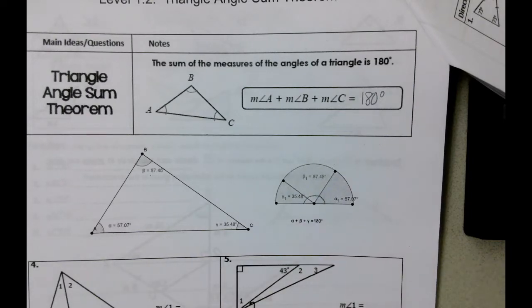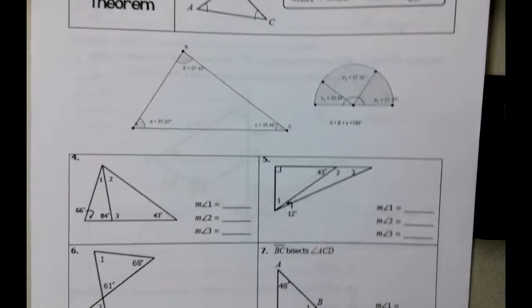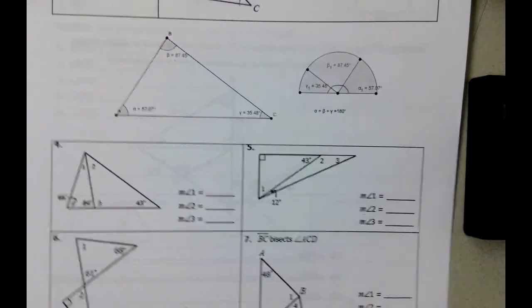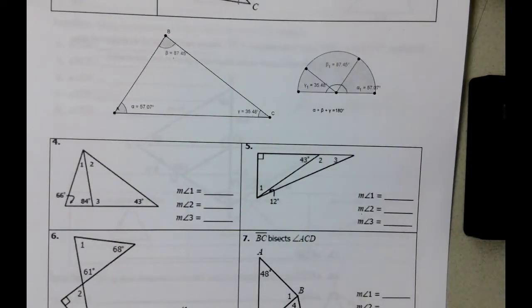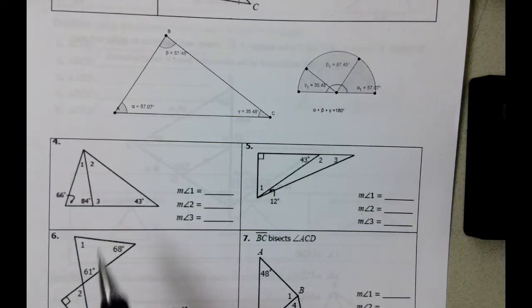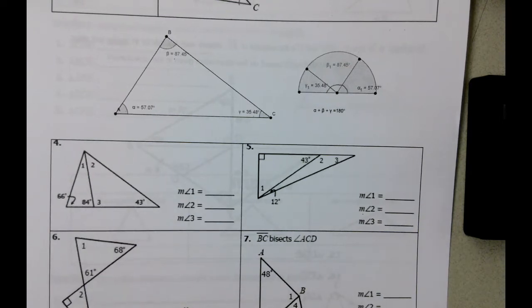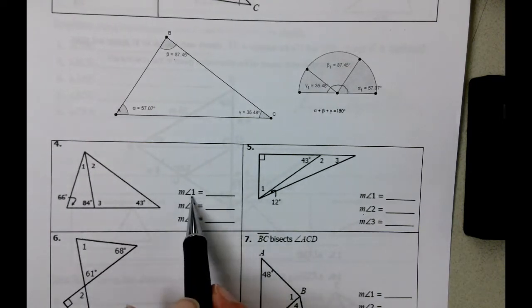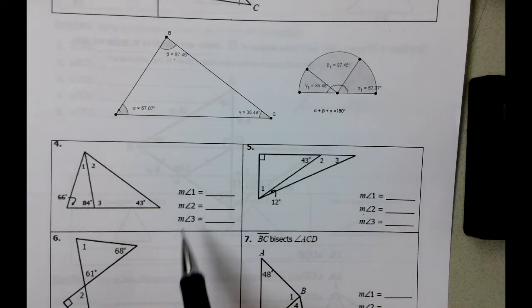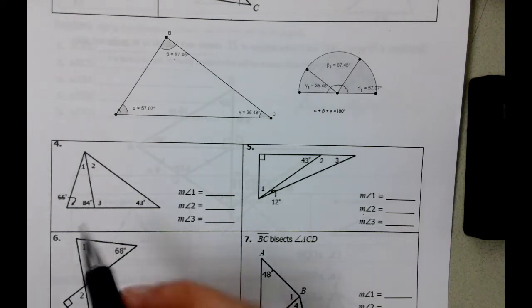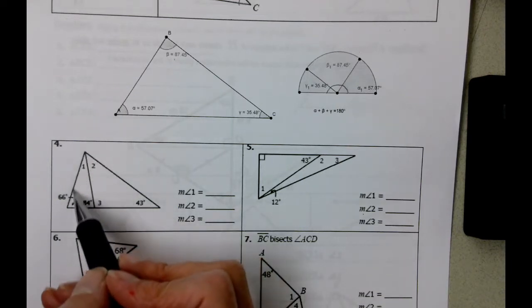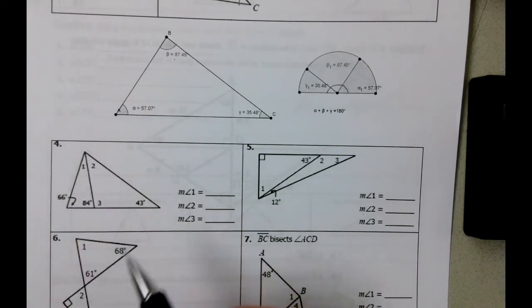That whole idea holds true when we try to figure out the different angles in these particular problems. So for instance, if we look at problem number four here, we want to find the measure of angle one, the measure of angle two, and measure of angle three. Well, if we look specifically over here, to the left of the picture, we know two of the angles in this triangle already.